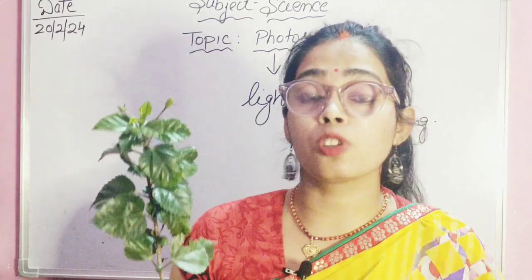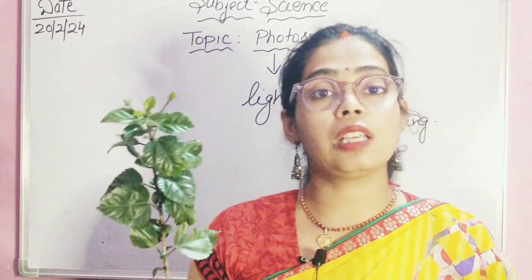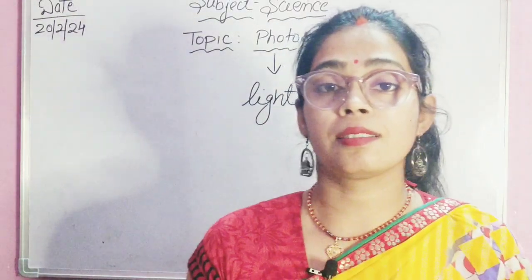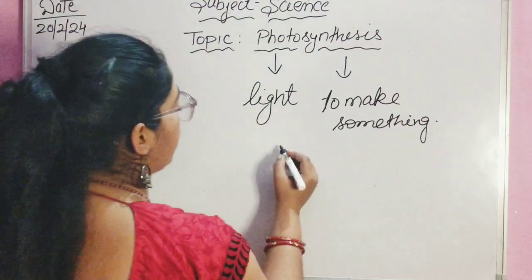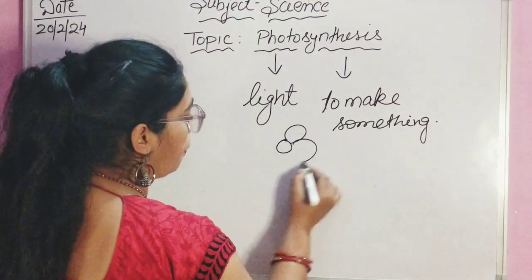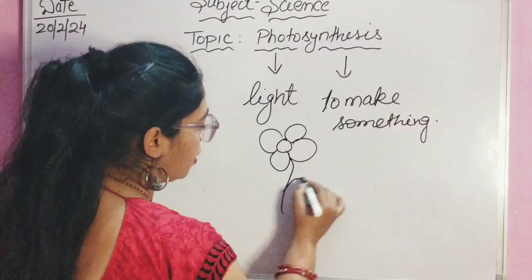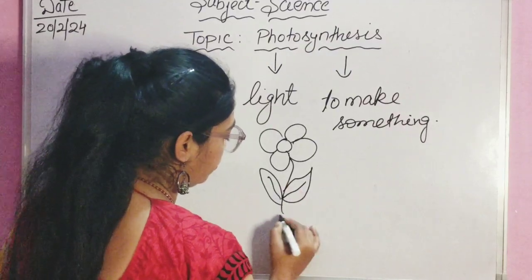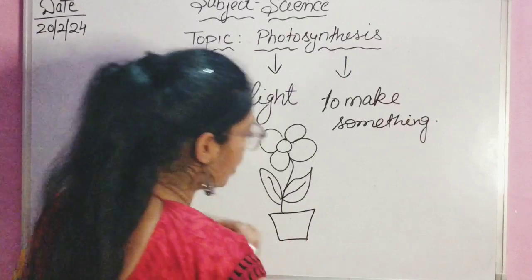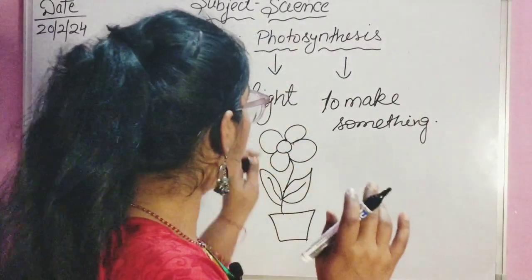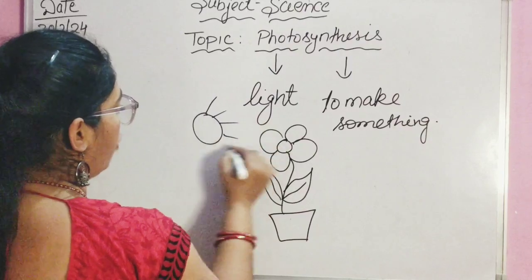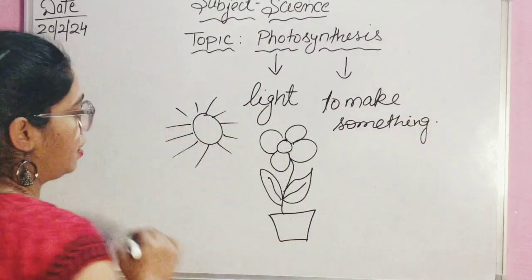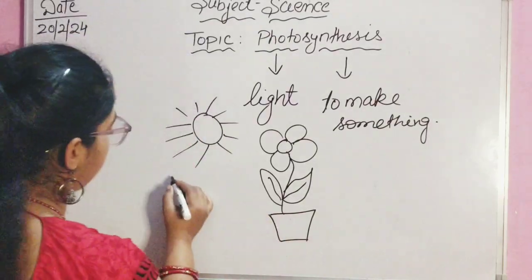Let's find out how plants prepare their food. The main thing here is light. From where do plants get light? Very good — plants get light from the sun rays. So the first ingredient for a plant to prepare its food is sunlight.